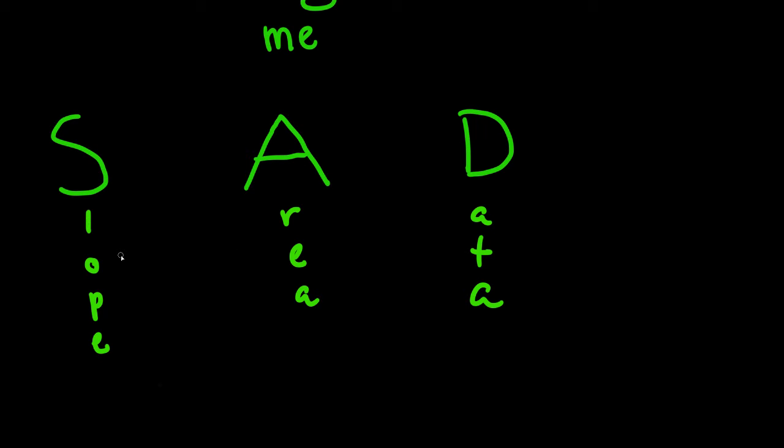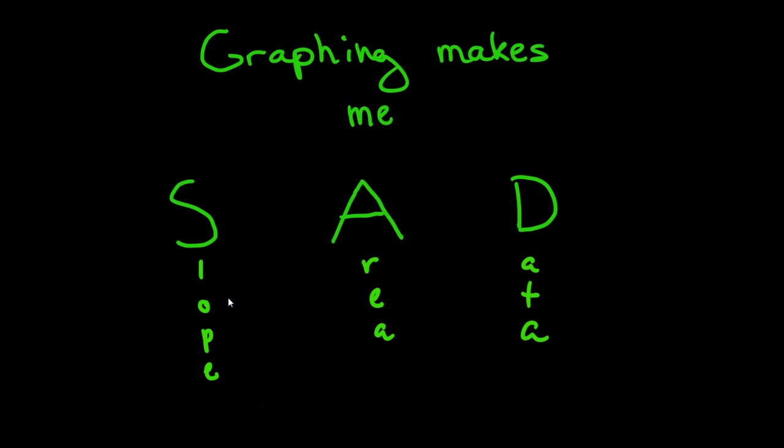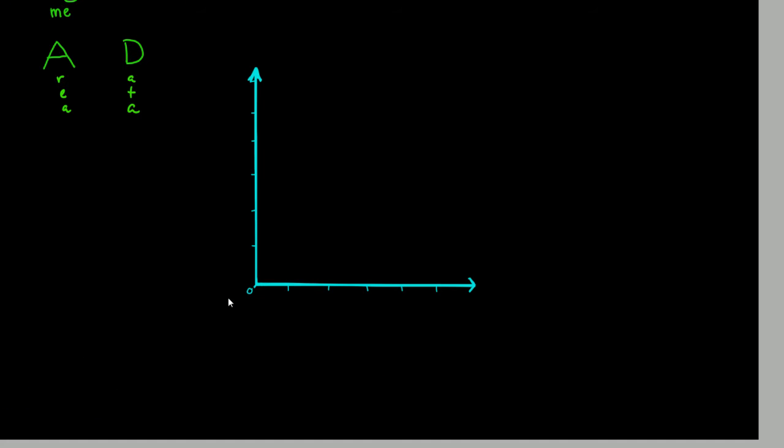We'll start with data. I'll go more into what I mean by each of these and where they will lead you. Data is all the points on the graph. For example, a data point would be the X and Y values of a graph.